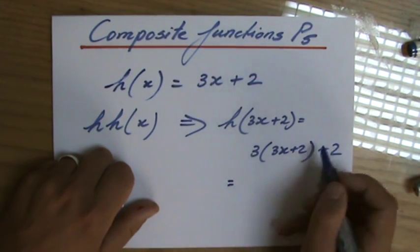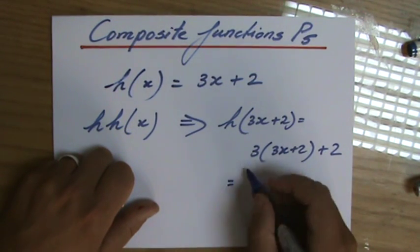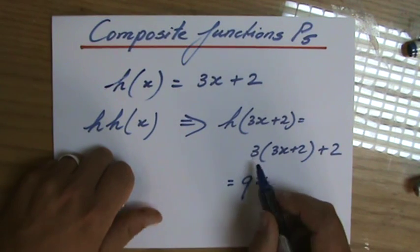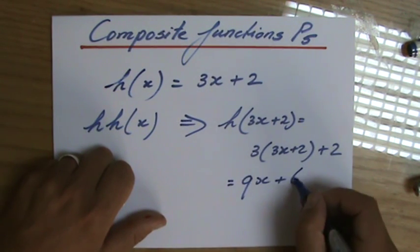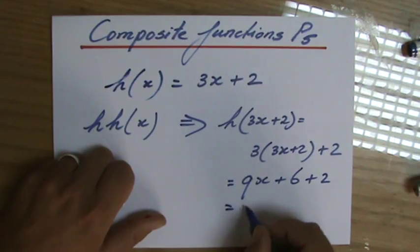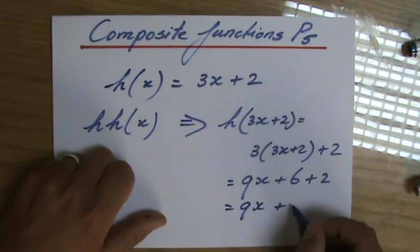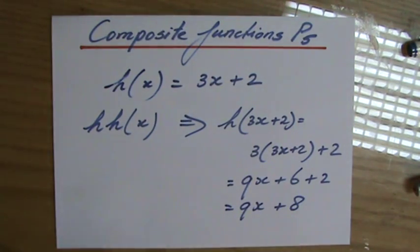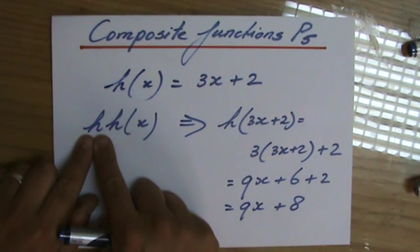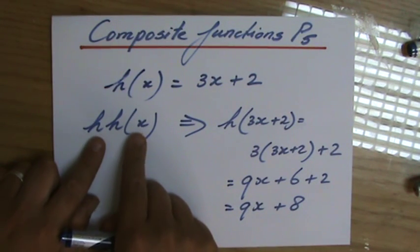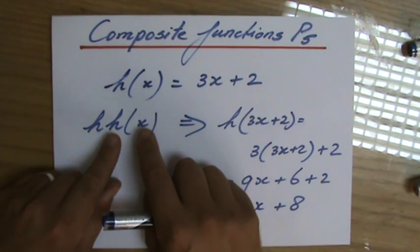I expand those brackets: 3 times 3x is 9x, 3 times 2 is 6, plus 2. So that's 9x and 8. So the composite function h(h(x)), I put the function of h into function h for x.